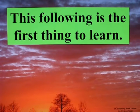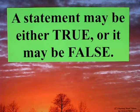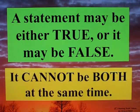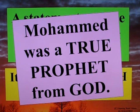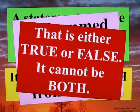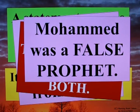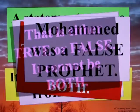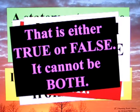The following is the first thing to learn: a statement may be either true or it may be false. It cannot be both at the same time. Mohammed was a true prophet from God — that is either true or false; it cannot be both. Mohammed was a false prophet — that is either true or false; it cannot be both.